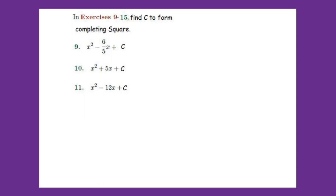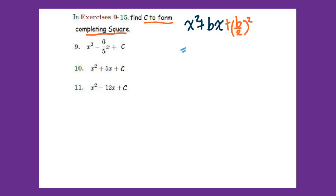In the following problem, find the c to form completing square. We know the completing square formula is x² + bx. Then we need to add (b/2)², so that x² + bx + (b/2)² equals (x + b/2)². So (b/2)² is the c.